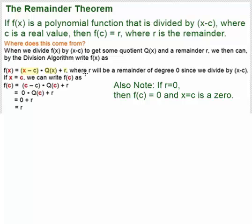Now if we let x equals c, when we plug in c for x, we get c minus c times q of c plus r. Well, c minus c is 0. 0 times q of c, whatever that is, it's still going to be 0. And all we're left with is r.